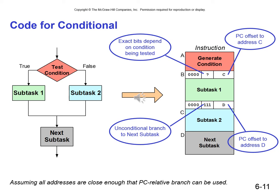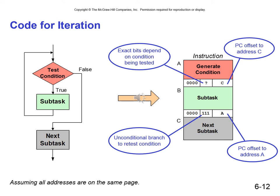In this slide we examine the code for iteration, specifically a while loop. The condition is checked prior to executing the body of the loop. Notice we have an unconditional branch that is always taken — it takes us back to whatever statements generate the condition, which is tested in the first branch command. This will continue to execute the subtask as long as the condition is true.